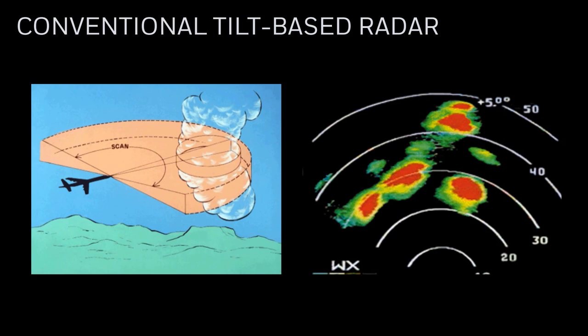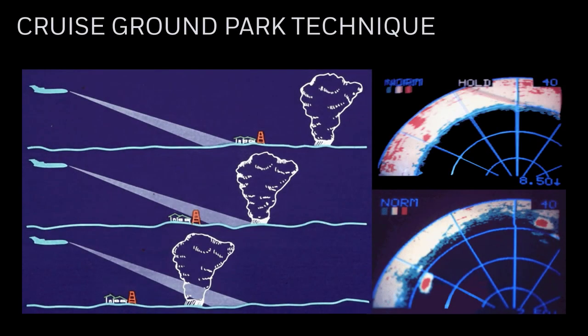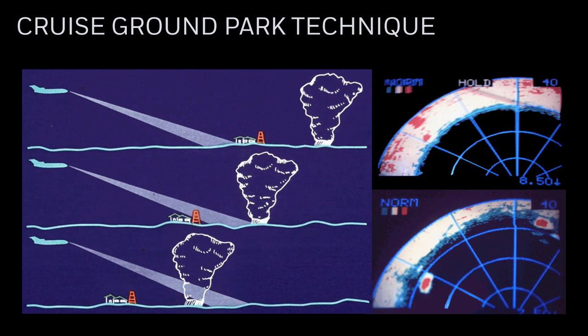Conventional radar provides reflectivity information in two dimensions: azimuth and range. For detection, most crews use a technique called the Crews Ground Park Technique, or establishing a protection zone. The technique involves lowering the beam until ground returns appear at the outer edge of the display. This has two main benefits: storm cells are easily identified because they walk out of the ground returns, and if there isn't a radar shadow behind the cell, we know the radar signal hasn't been attenuated. This technique detects all cells, but analysis is still required to make a deviation decision.